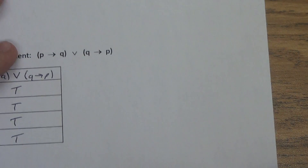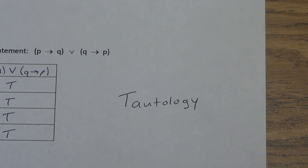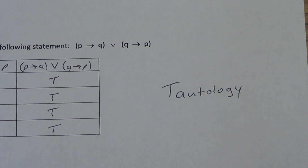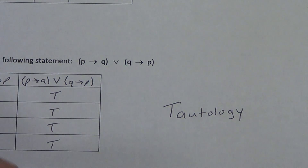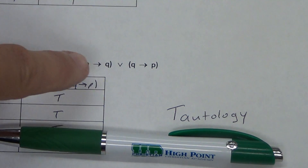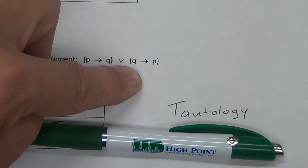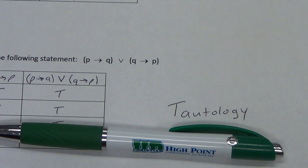When all of the last column is true, we have a special thing called a tautology. That means the statement we are making is always true no matter what — regardless of whether P is true, Q is true, P is false, Q is false, any combination. So 'if P then Q, or if Q then P' is a tautology. That's an introduction to truth tables. They can get much more complicated, but understand these basic five things: the not, the and, the or, the if-then, and the if-and-only-if. If you want to do this additional project, come get the worksheet from me and work on it on your own.